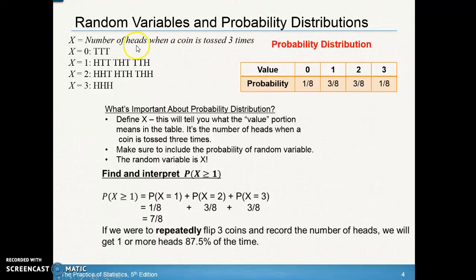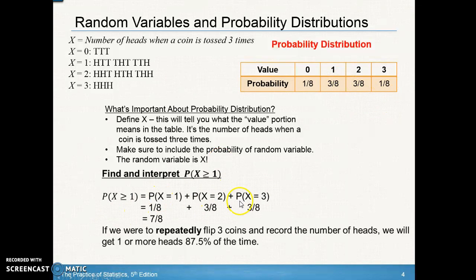Since X is the number of heads obtained when we toss a coin three times, the probability that X is greater than or equal to one tells us the probability of getting one or more heads. That means we can get one head, two heads, or three heads. Adding those three probabilities together gives us seven-eighths, or 87.5% of the time, since there's only one outcome where you get all tails.